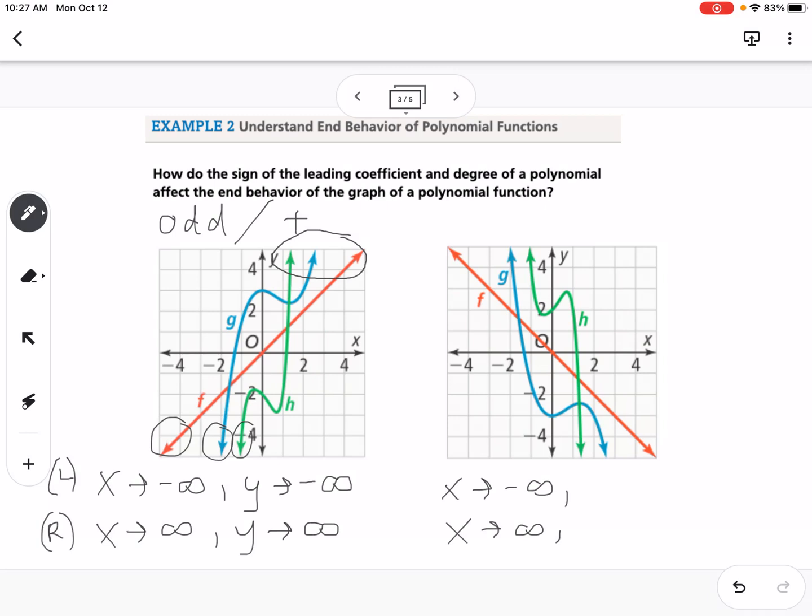This second graph over here is an example of odd with a negative leading coefficient, so odd and negative. So odd and negative, you can see that it's the opposite. As we go to the left, our graph is going up, and as we go to the right, our graph is going down. So getting used to that notation of as x goes to positive infinity and as x goes to negative infinity, that's probably the trickiest part of this.